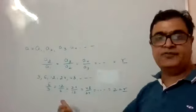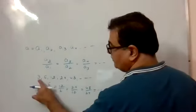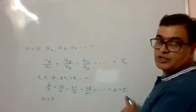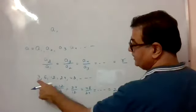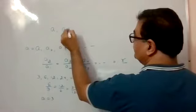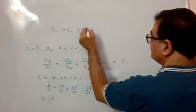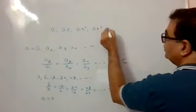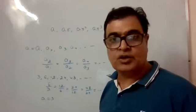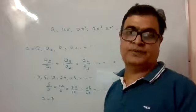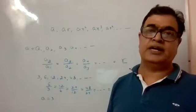Since the ratio is maintained, this is a GP. Here A=3 and R=2. Writing this series generally: first term is A, second is AR, third is AR², fourth is AR³, and so on — this is the general geometrical progression, just as in AP it was A, A+D, A+2D, here it is A, AR, AR², AR³.